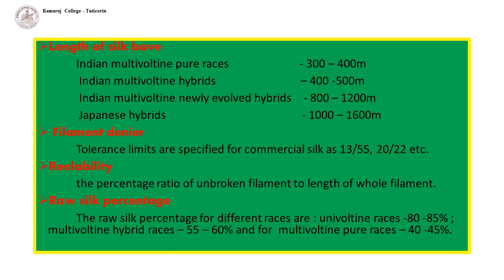Length of Silk Bave: Silk bave means the undivided silk thread — a bi-filament thread where two filaments are cemented together by silk gum or sericin. The length of silk bave for Indian multivoltine pure races is 300 to 400 meters; for Indian multivoltine hybrids, 400 to 500 meters; and for Japanese hybrids, 1,000 to 1,600 meters.